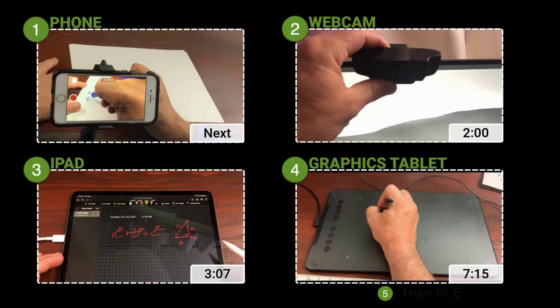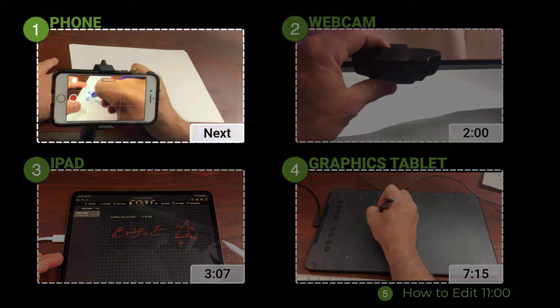If you want to show your students how to solve a problem, or you're simply trying to literally draw their attention on to parts of a presentation, you're going to need a pen of some kind and maybe a little bit of hardware. In this video I'm going to show you four different ways for Mac users to draw in a way that you would have done normally on a whiteboard. There are multiple sections to this video, so feel free to jump around to the part that's most relevant to you.